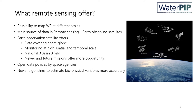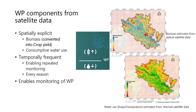In recent years there are newer algorithms to estimate biophysical variables more accurately, which makes the analysis more reliable. Now let's see the different water productivity components from satellite. As you all know, water productivity has two major components: the numerator is biomass — above ground biomass production — which can be converted to crop yield if you know the crop information and parameters. And in the denominator, it is the consumptive water use, often represented by actual evapotranspiration, especially when estimated from remote sensing.